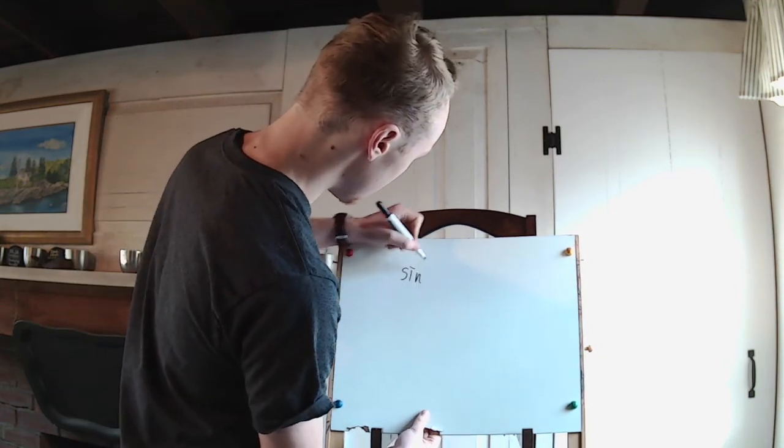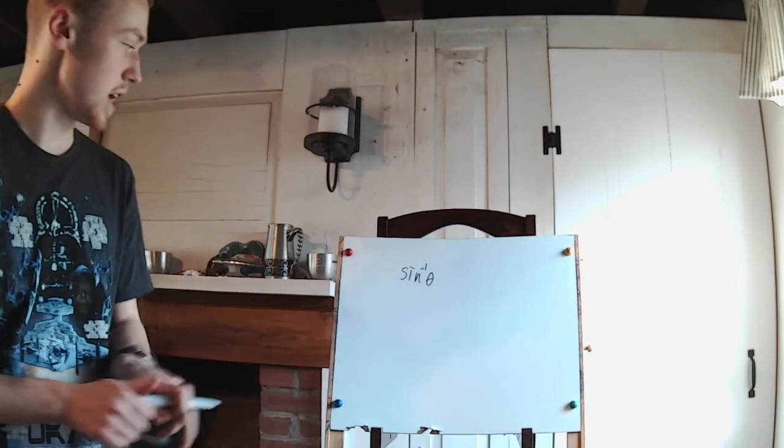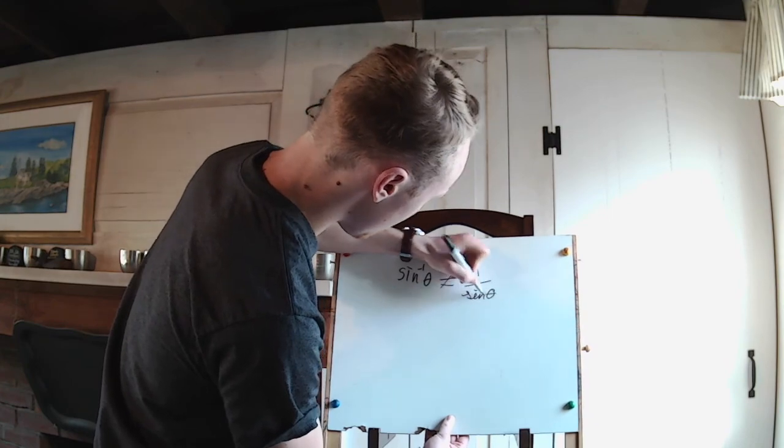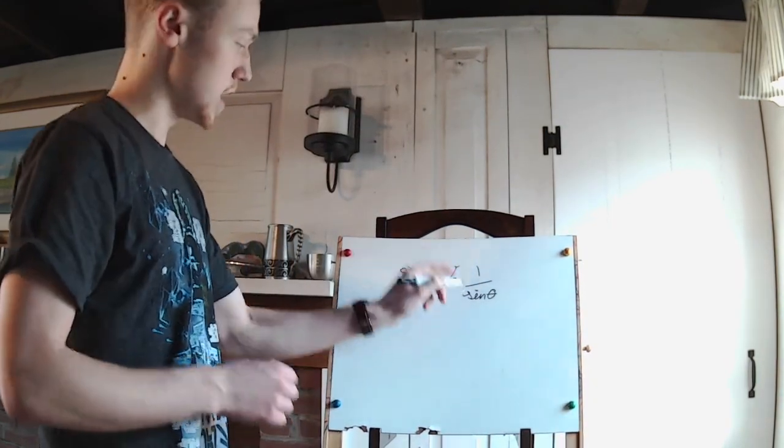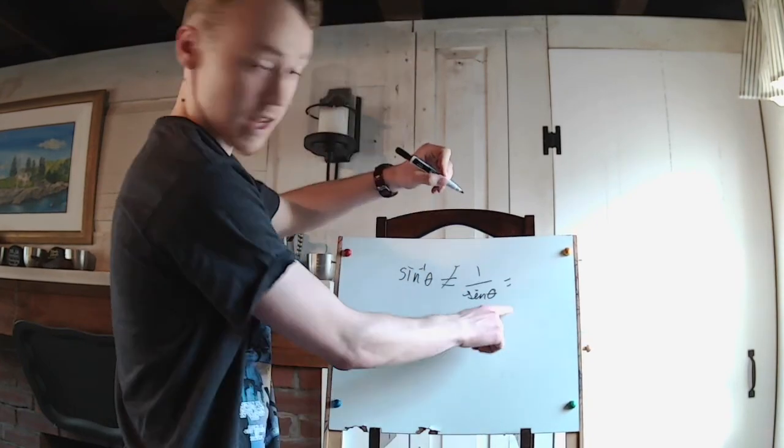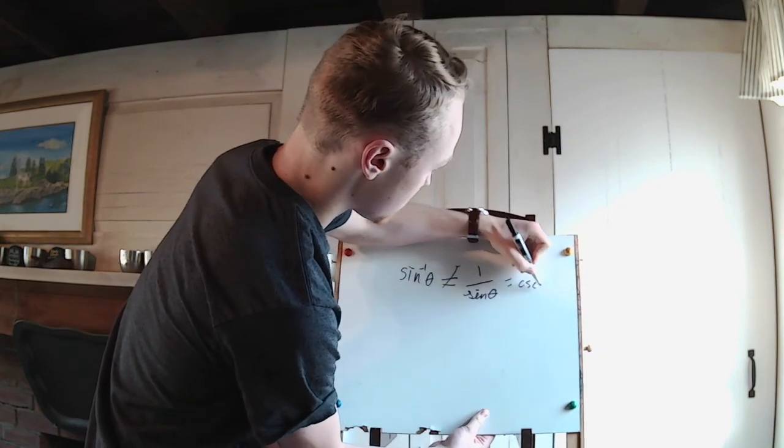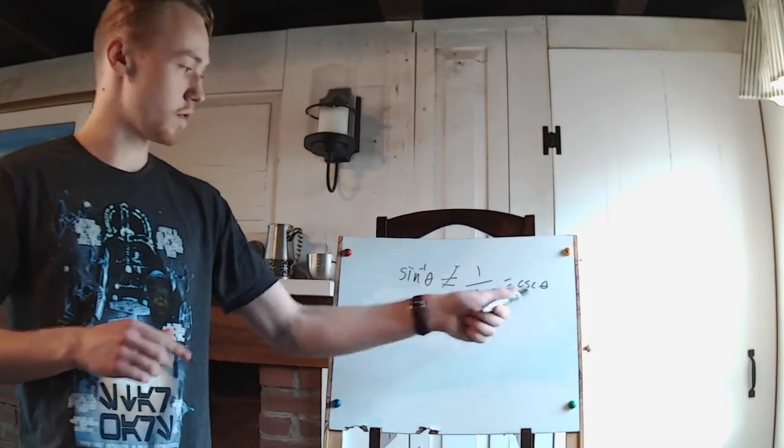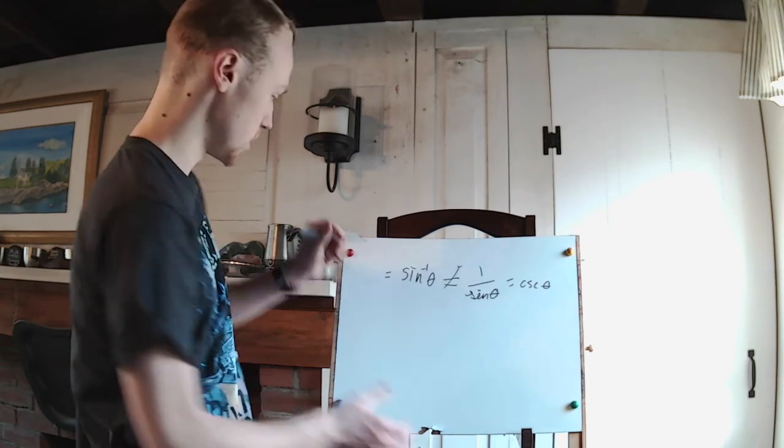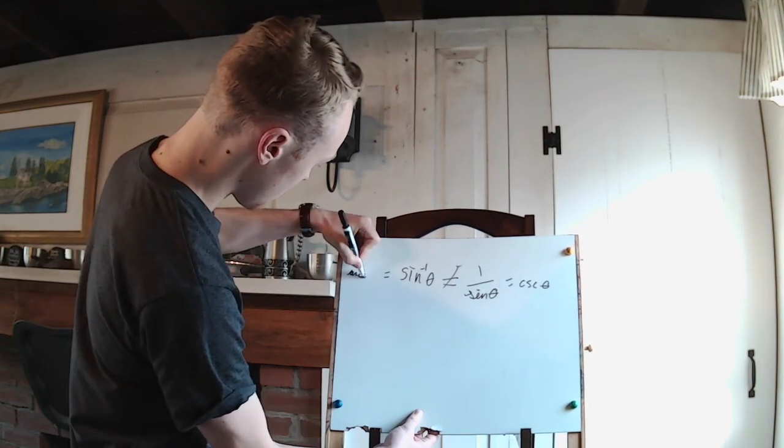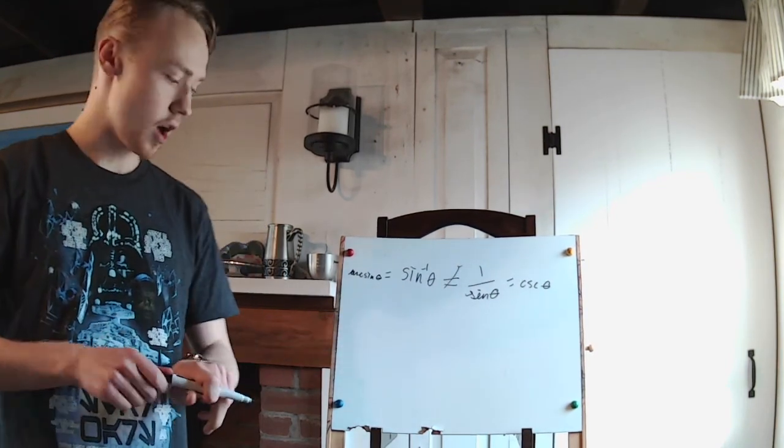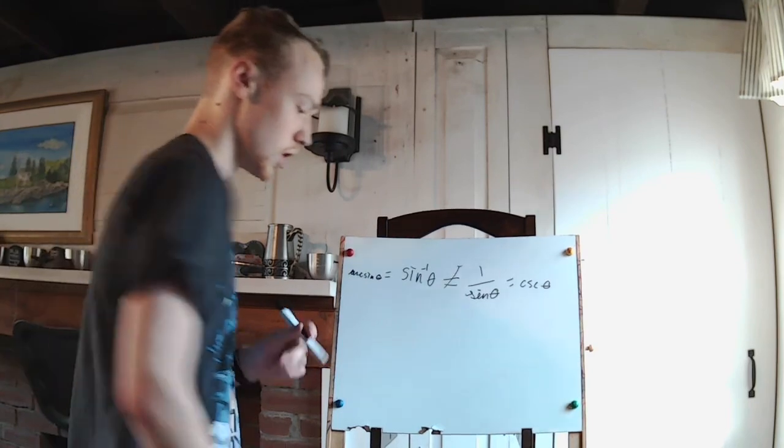Okay, here we go. The first thing we need to understand is that sine inverse of theta is not equal to one over the sine of theta. This is the most important thing we need to understand. One over sine of theta is in fact equal to cosecant of theta. This is its own definition, its own function, completely separate from inverse sine, which to clear up confusion is often termed the arc sine. So this is the arc sine function, which is the same as the inverse of the sine function.